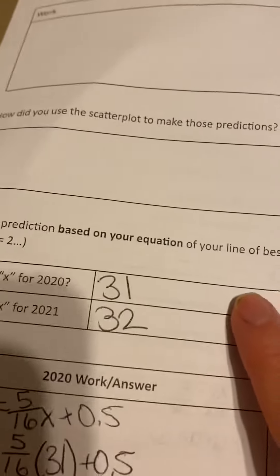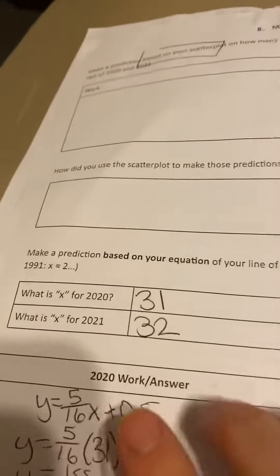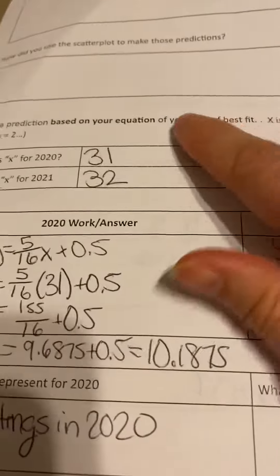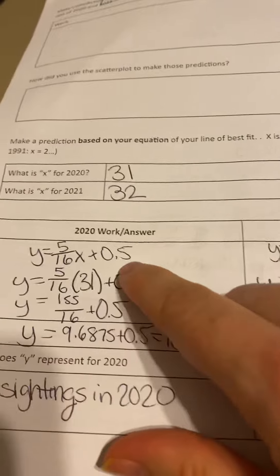So X for 2020 would be 31. So this would be 31 years after 1989. And then 2021 would be 32 years. So now that you know what X is, you're going to plug that into your equation. This one's asking based on your equation.